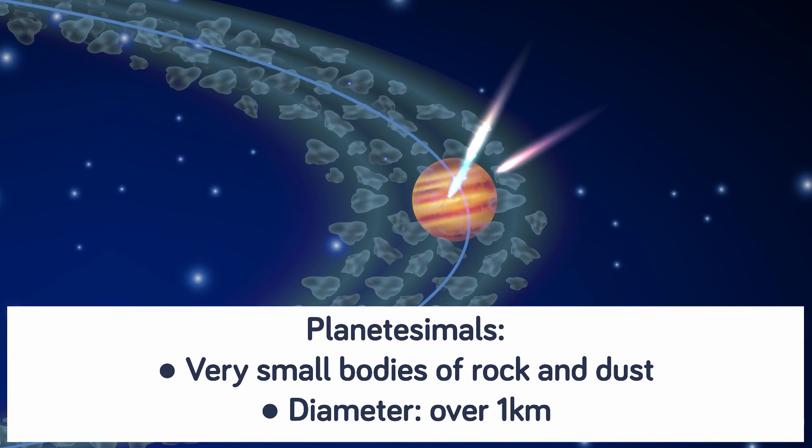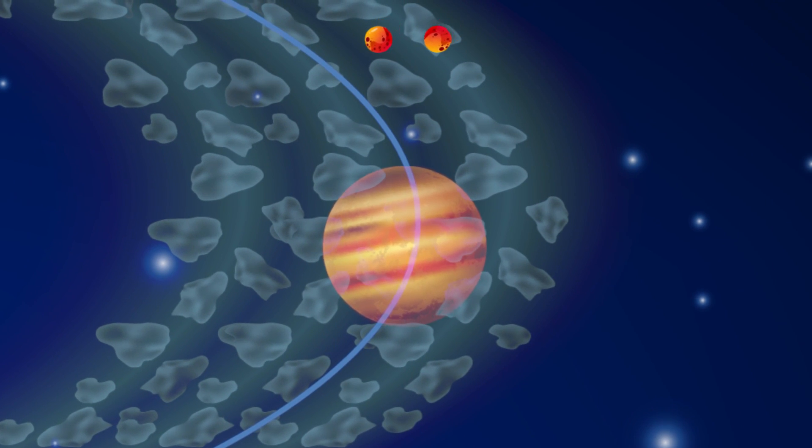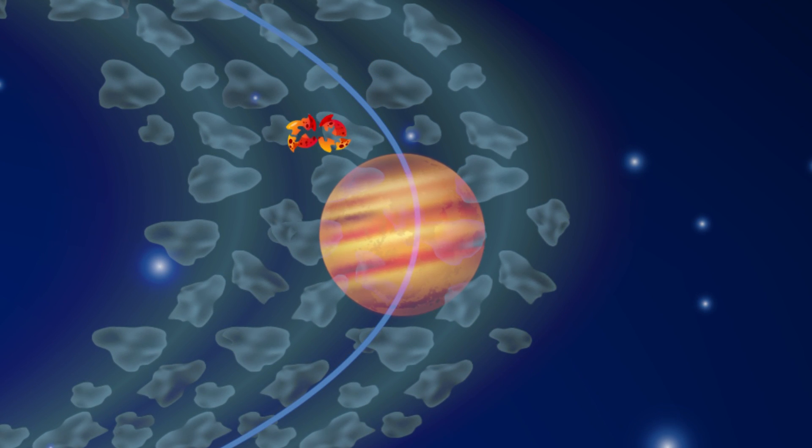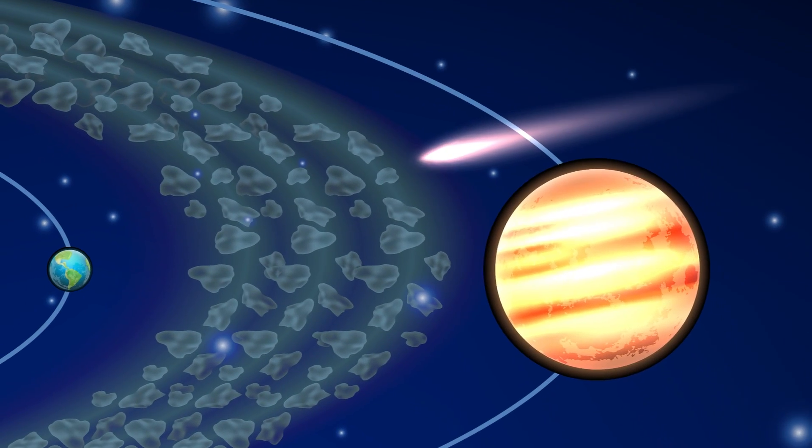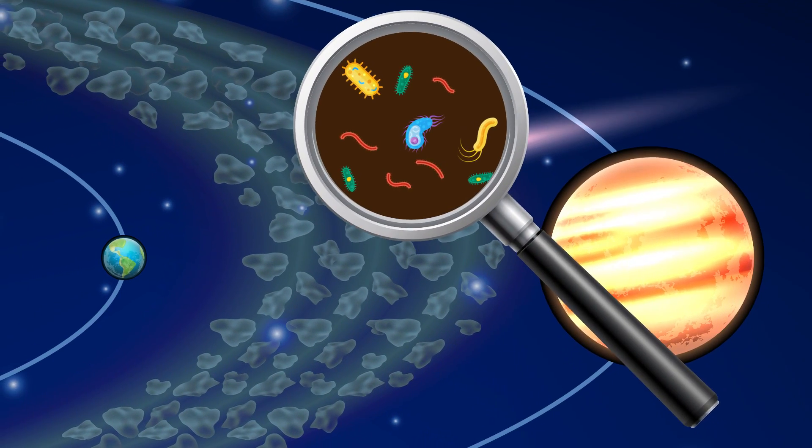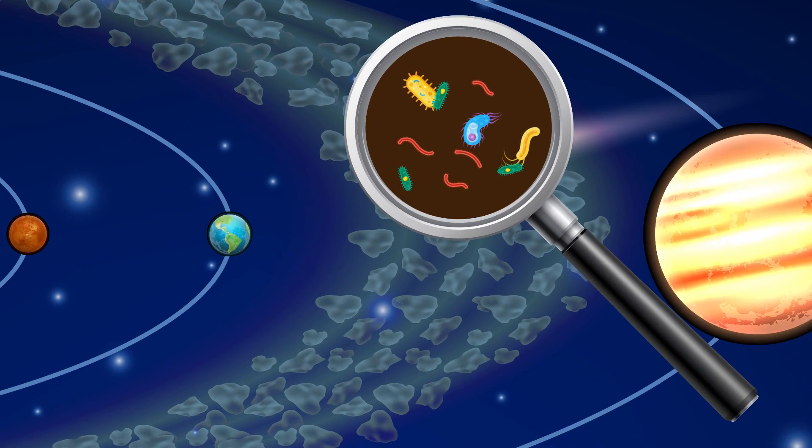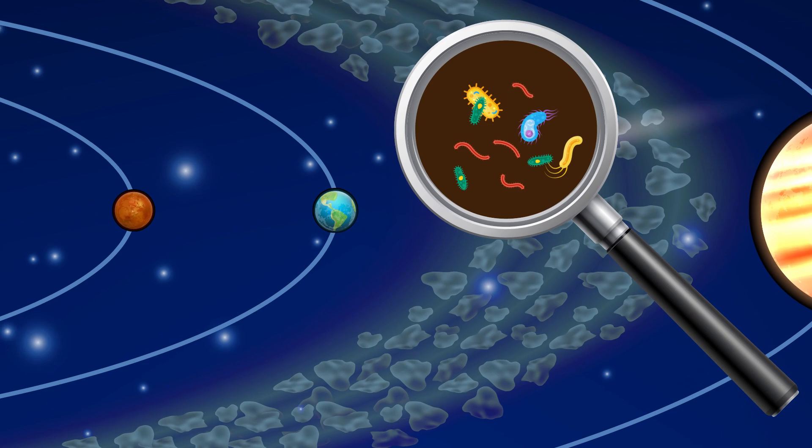Scientists explain that because of Jupiter's gravity, some of those things called planetesimals couldn't join and form a proper planet. Planetesimals could be said to be very small bodies of rock and dust, which measure over one kilometer in diameter. But Jupiter's gravity forced them to smash together, and this formed a massive asteroid belt. From this asteroid belt, smaller rocks might have traveled to Earth. What's interesting about this is that if life on Earth did come from those rocks, then they might have carried life to other planets outside of our solar system, if the same conditions were present.